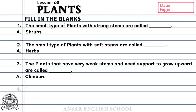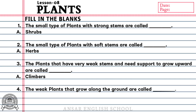Question number 4: The weak plants that grow along the ground are called dash. Answer: Creepers.